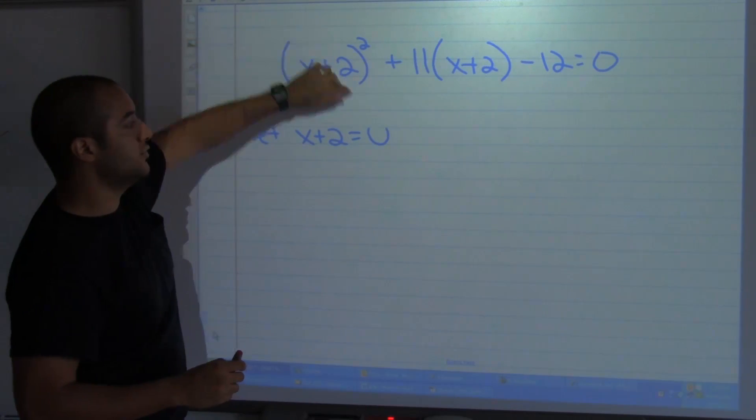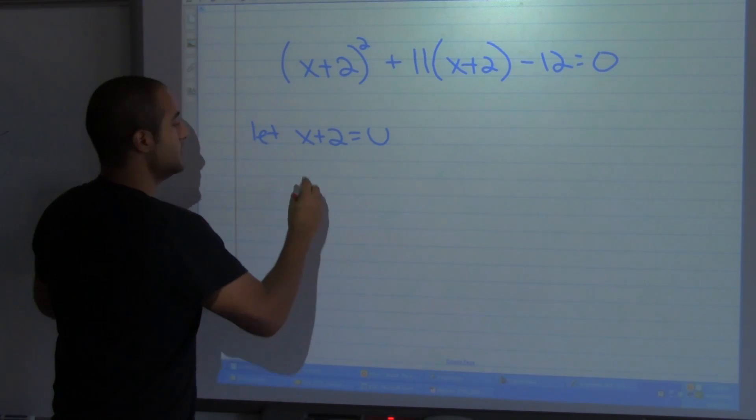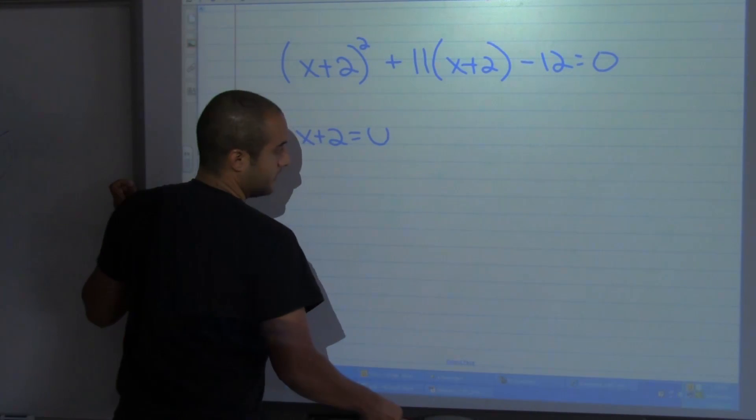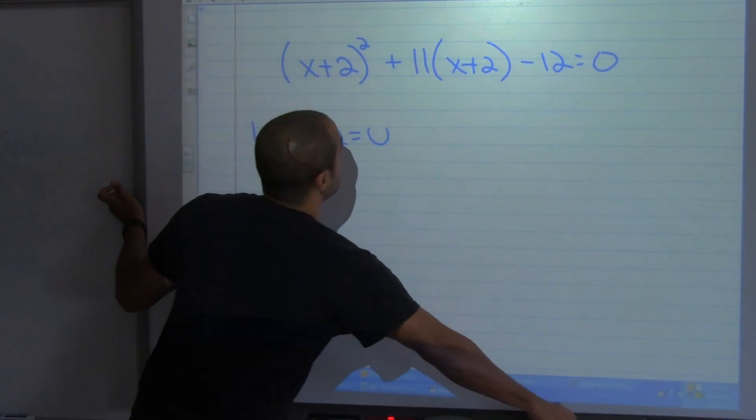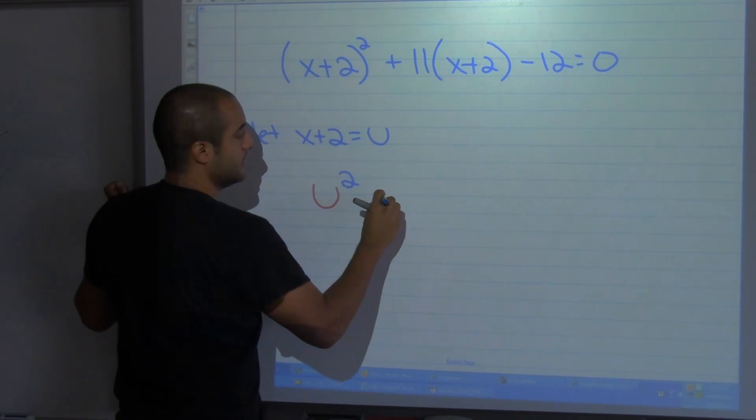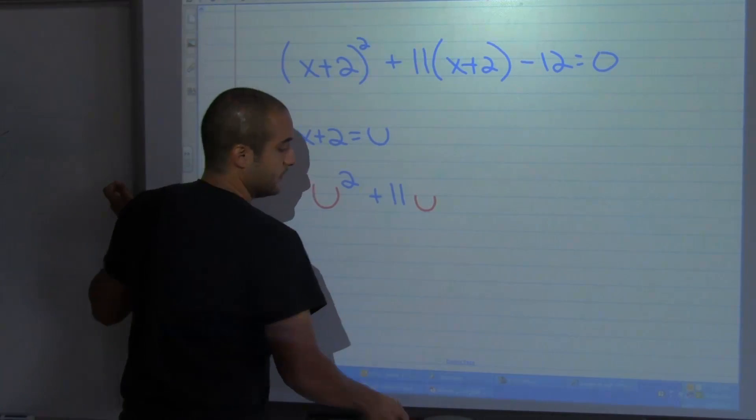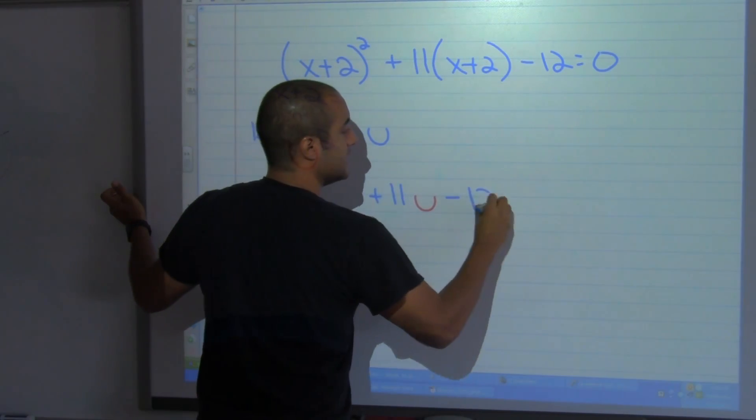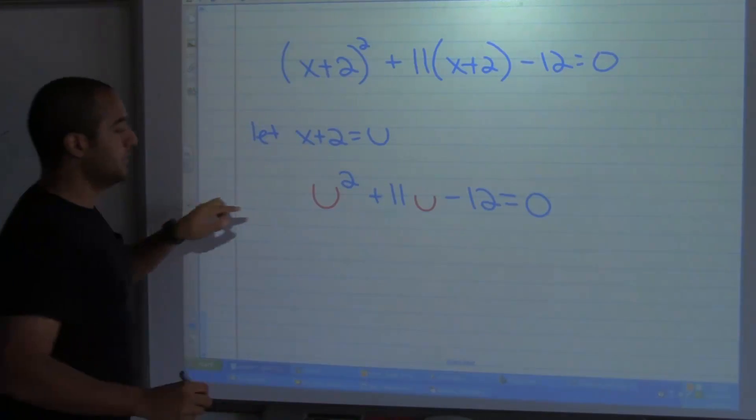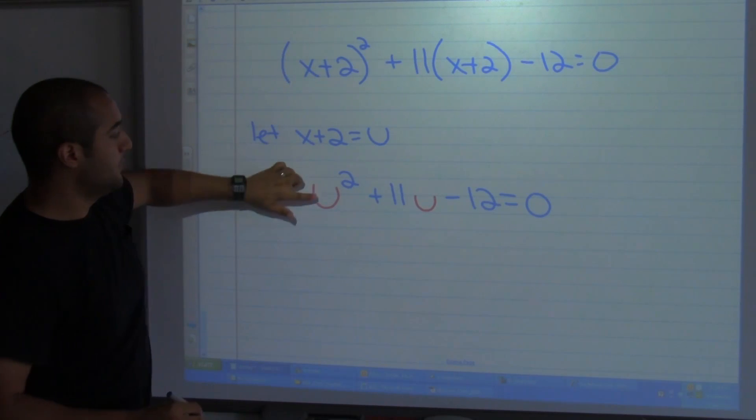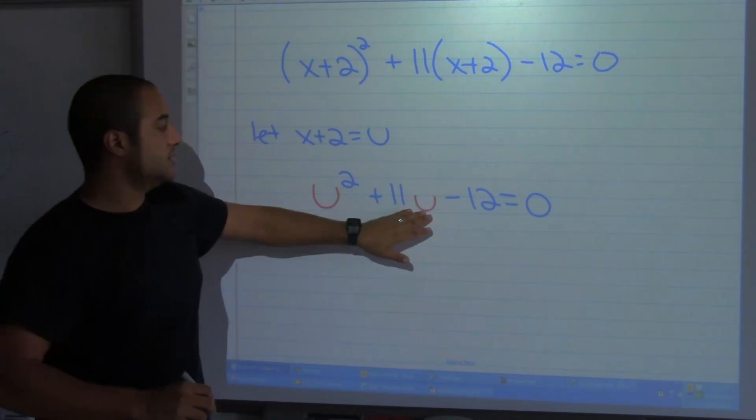I'm going to replace x plus 2 with the variable u. So u squared plus 11u minus 12 equal to zero. Notice that where the u's are is where I have x plus 2.